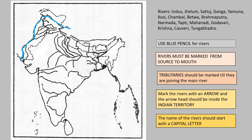This is river Indus — we have marked it from starting till ending. The main river is shown in a lighter color. Now let's see Jhelum — it is a tributary, marked until it joins Indus. Then Sutlej is here, marked until it joins Indus. You have to draw only that part.